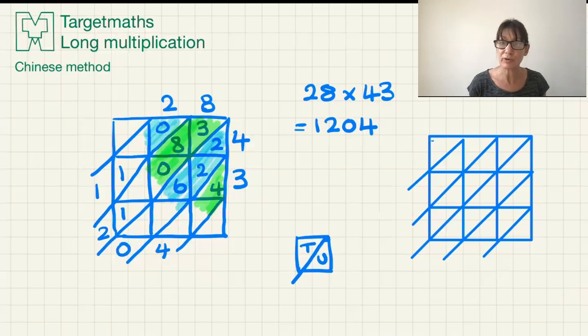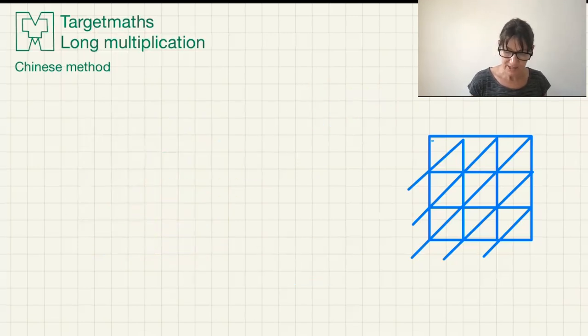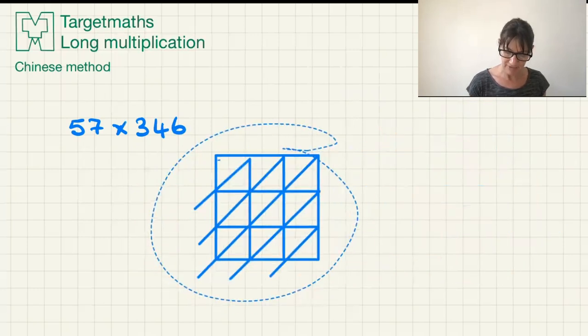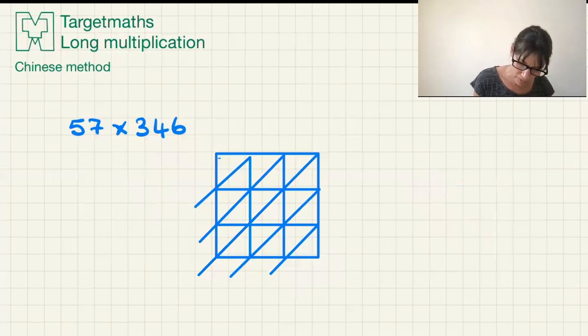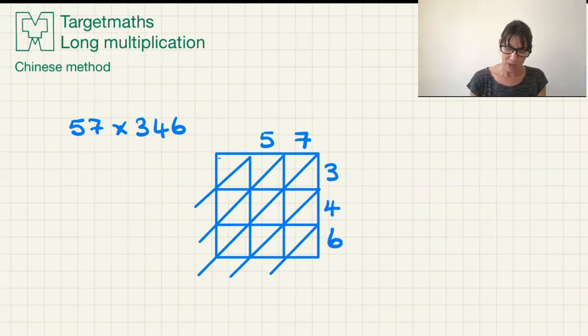That is how you use the grid to get your answers. I'm going to do one more just so we see it again a second time. Let's do 57 times 346. And I'm going to use this grid as it's there ready and waiting to be used.